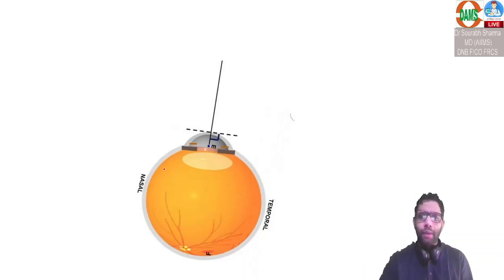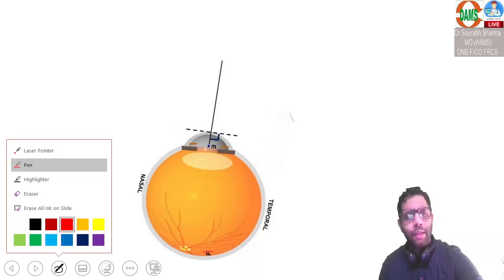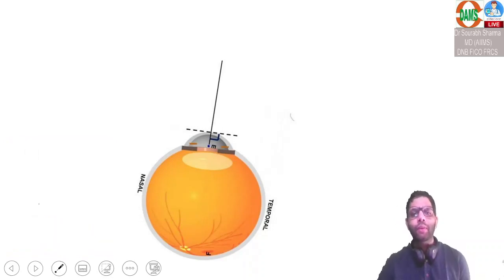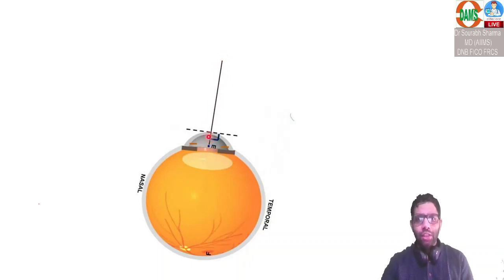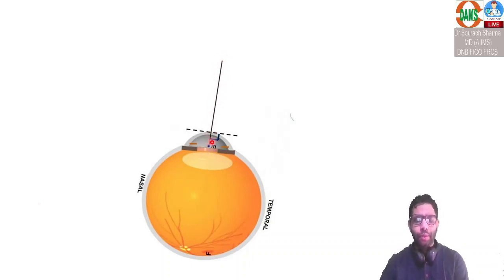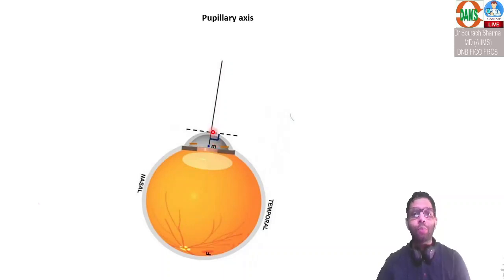In this eyeball, you can see a line — this is the iris plane. That is the pupil over here. This line is going and touching the center of the pupil. This line which is bisecting the center of the pupil is known as the pupillary axis.